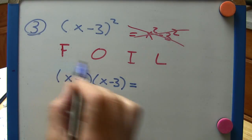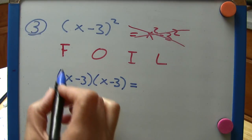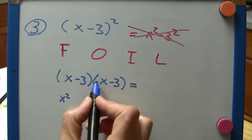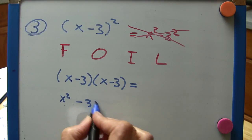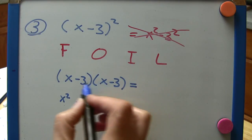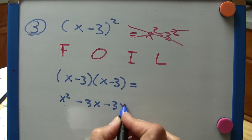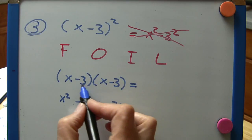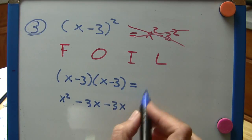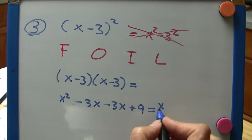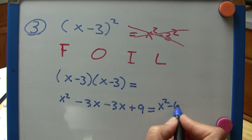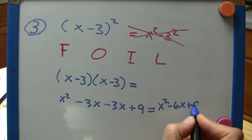So we have to apply FOIL here. First would be x squared. The outer, well that's x times negative 3, so that's minus 3x. The inner is also minus 3x. And then the last, well that's minus 3 times minus 3, that's positive 9. So taking a moment to combine those middle terms, we're going to get x squared minus 6x plus 9.